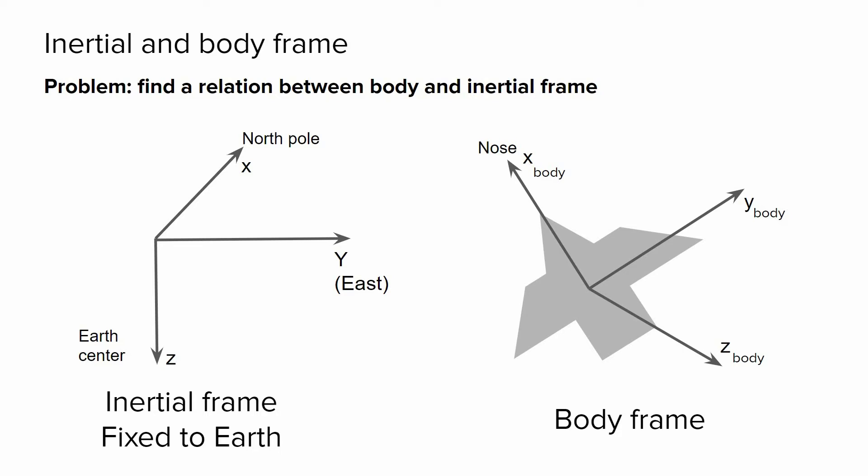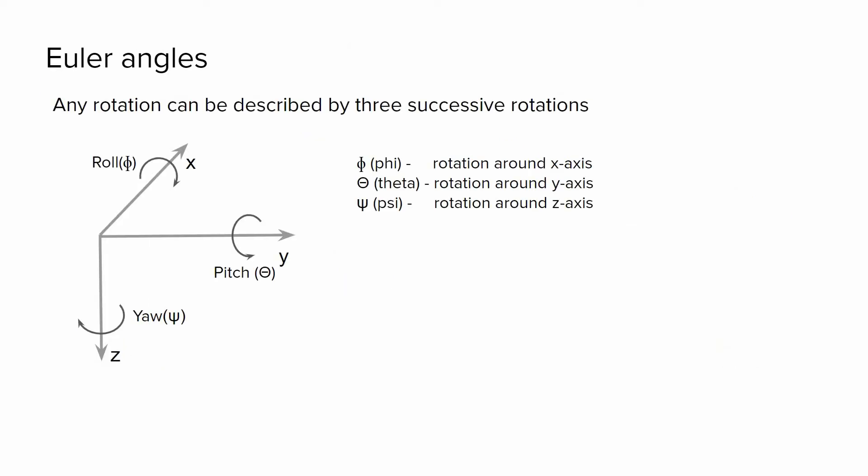And we can find that relation using Euler angles. Euler stated that any attitude, any orientation can be described by three successive rotations. Rotation around Z axis, we call it yaw. Rotation around Y axis, we call it pitch.